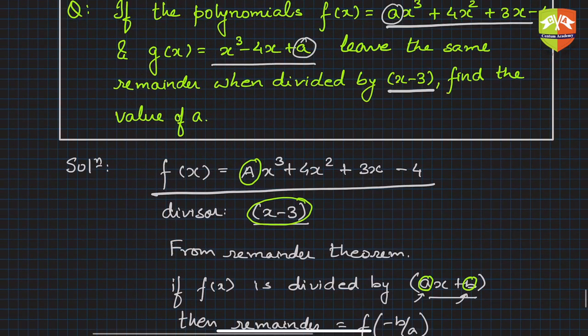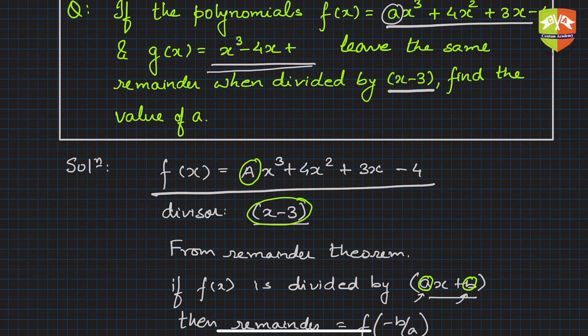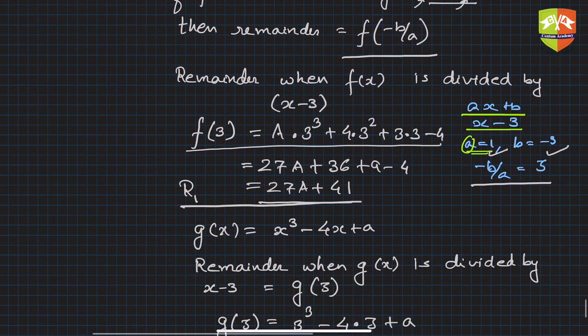Now let's take the second polynomial g(x) = x³ - 4x + A. Again, I'm replacing this 'a' by capital A so you're not disturbed or confused. We are finding capital A in both cases.